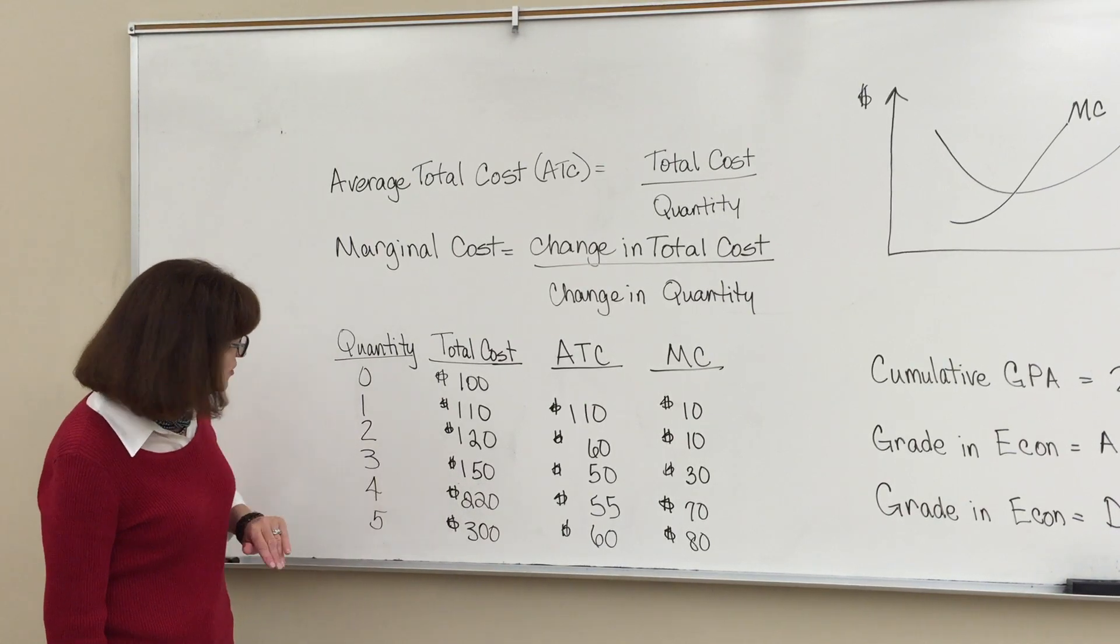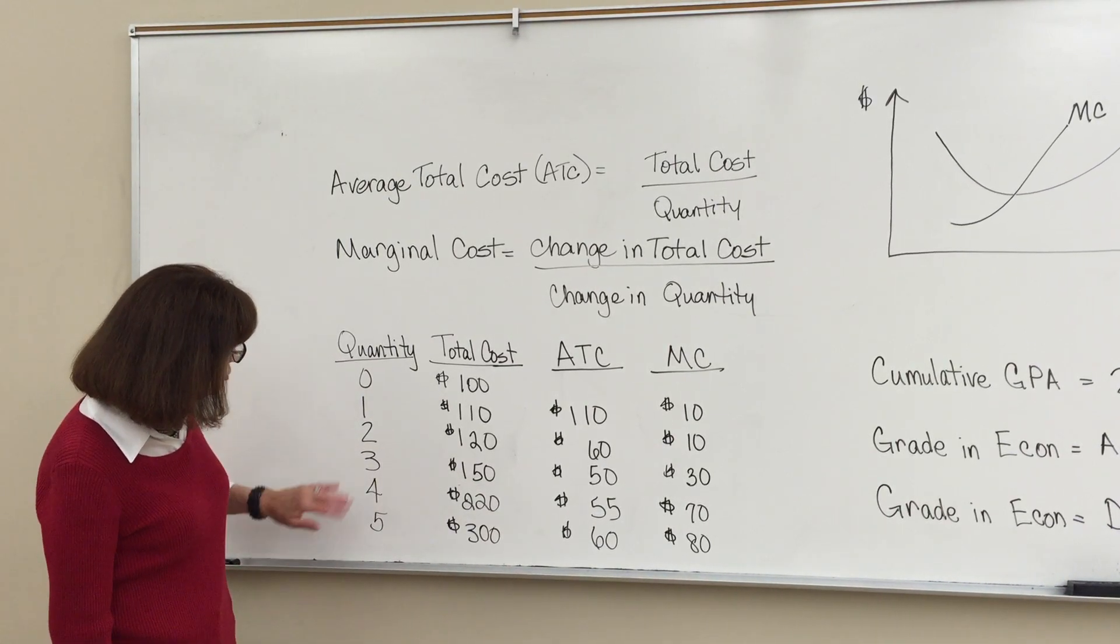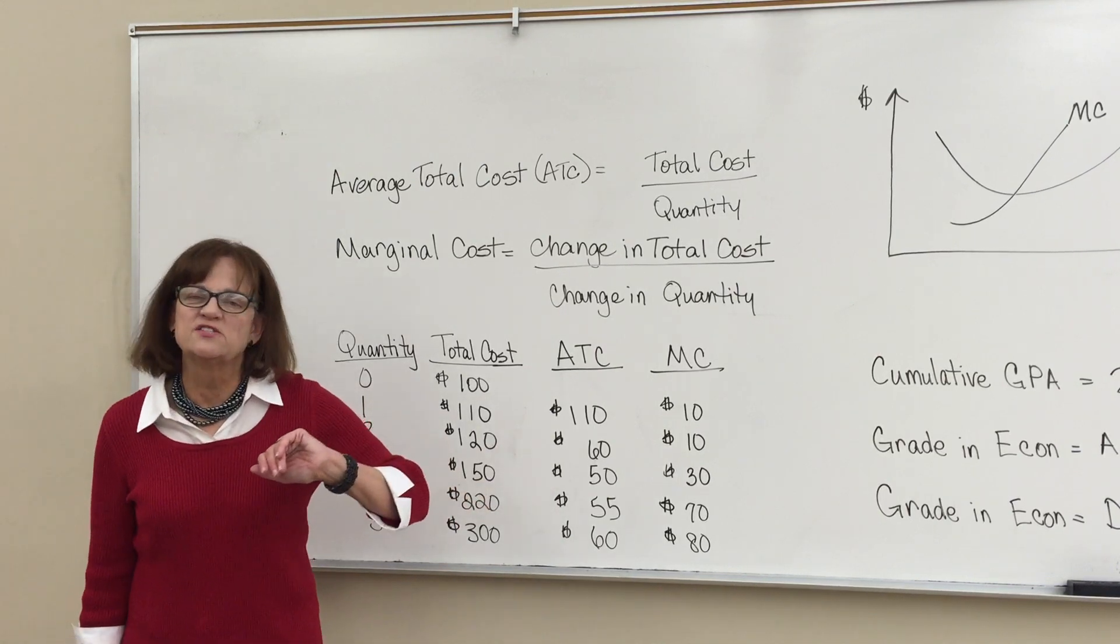The total cost of producing three units is $150. You divide that by three, the average total cost is 50.